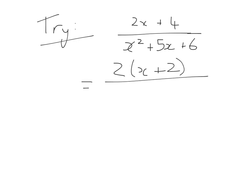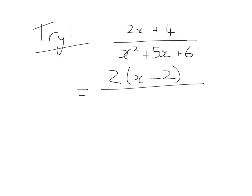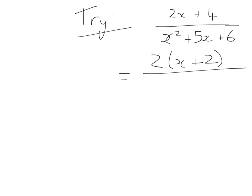And then on our bottom of our fraction, we may need to maybe step or go across to the side and work out that one. So I'm going to just do this over to the left-hand side. So we've got x squared plus 5x plus 6.